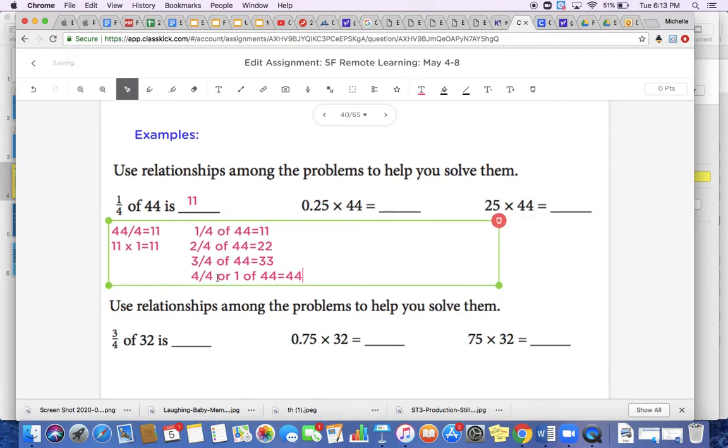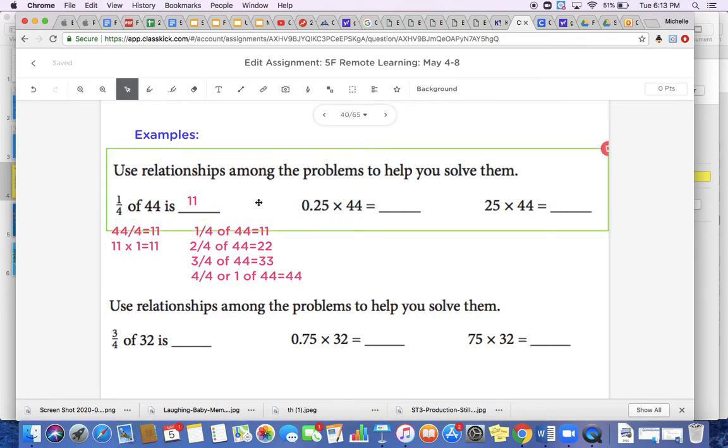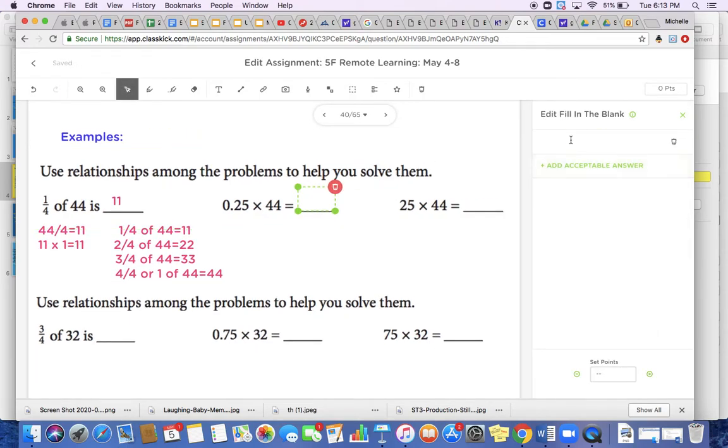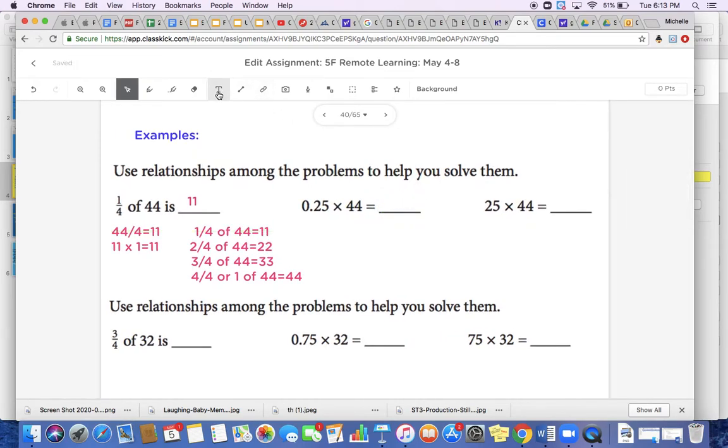All right, so I'm going to leave this here, but you do not need to show all this work today for your problems. All you simply have to do would be showing me this problem. This right here would be the perfect amount of work to be shown today. Now if we know what 1/4 of 44 is, guess what, we know what 0.25 times 44 is, because 1/4 and 0.25 are the same number. So I know my answer for the first two problems.